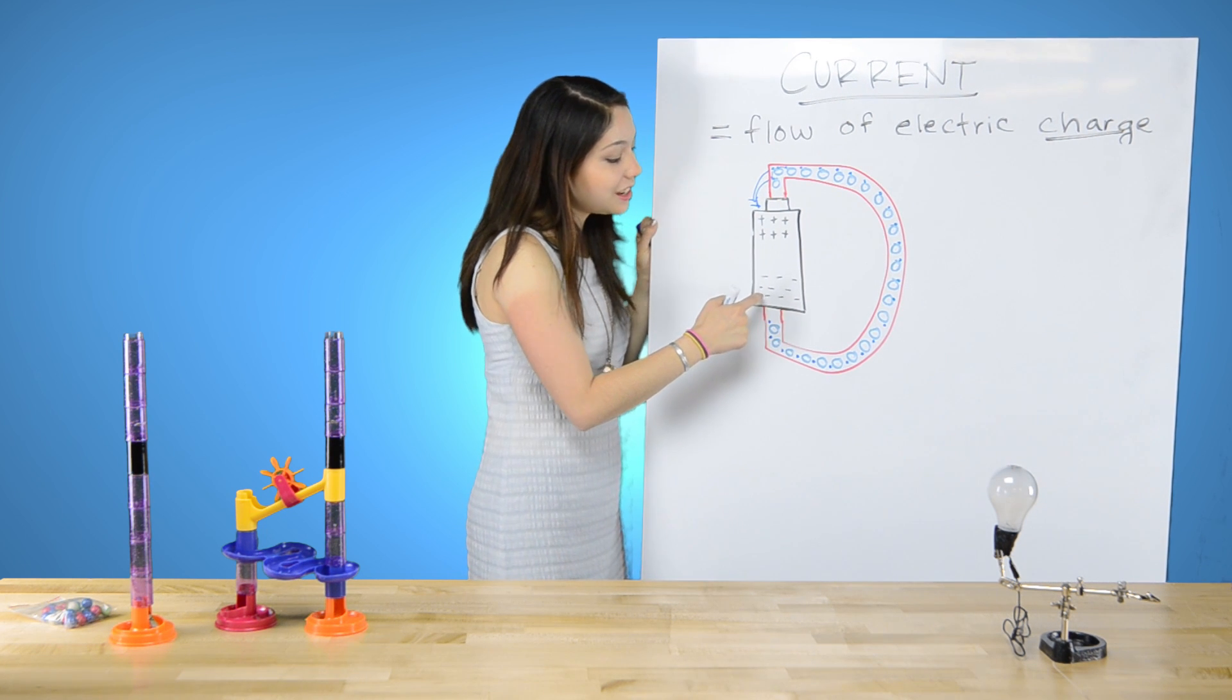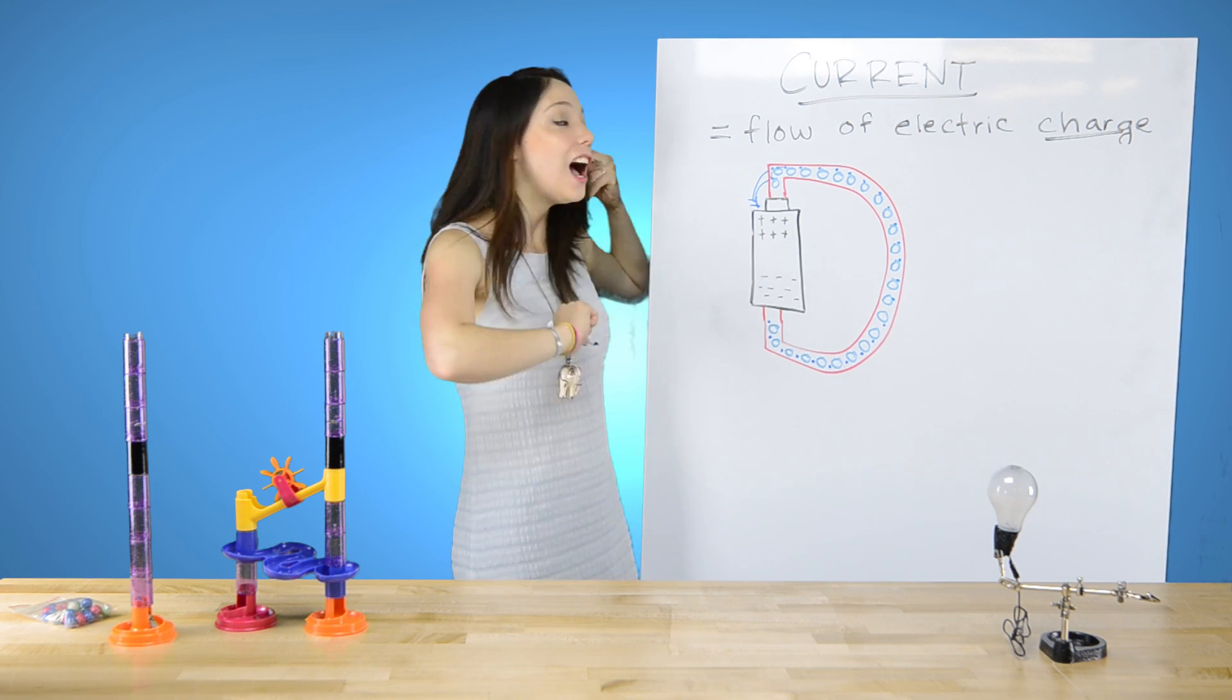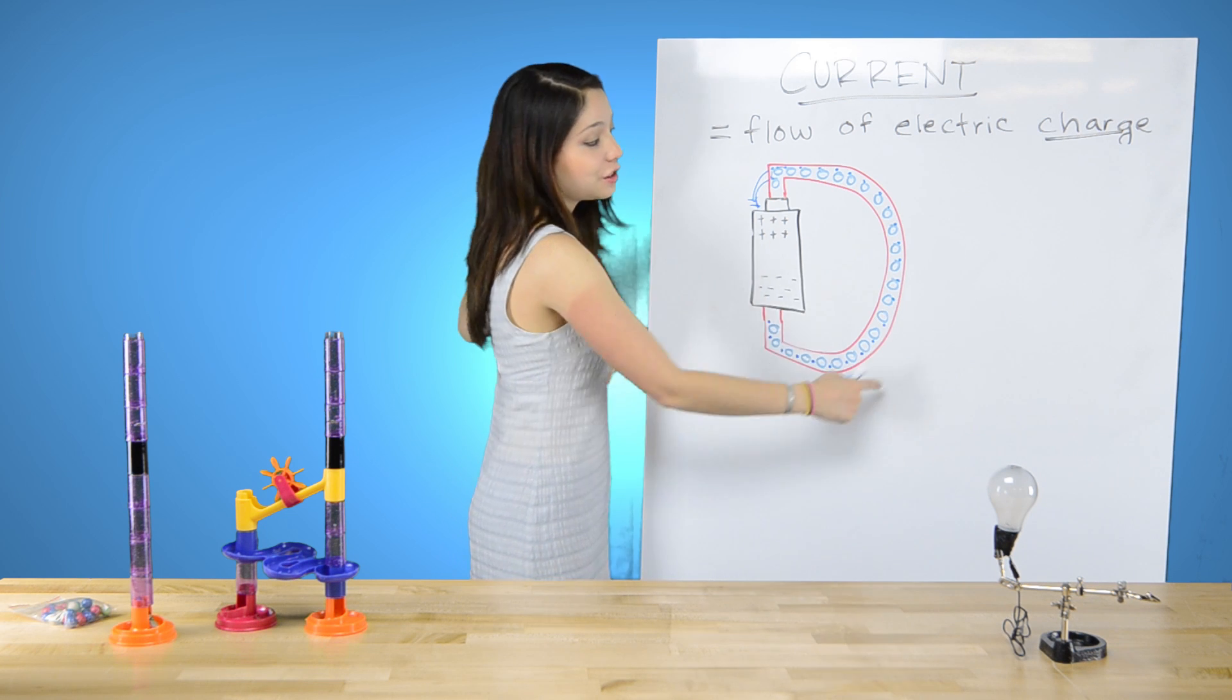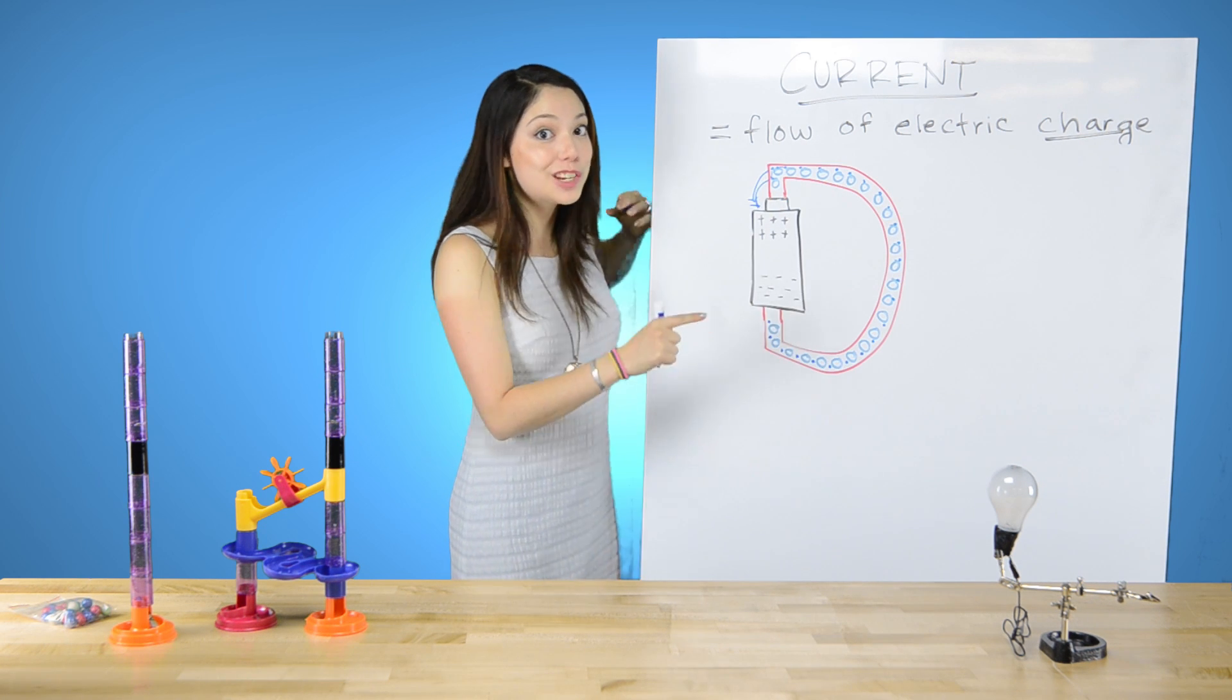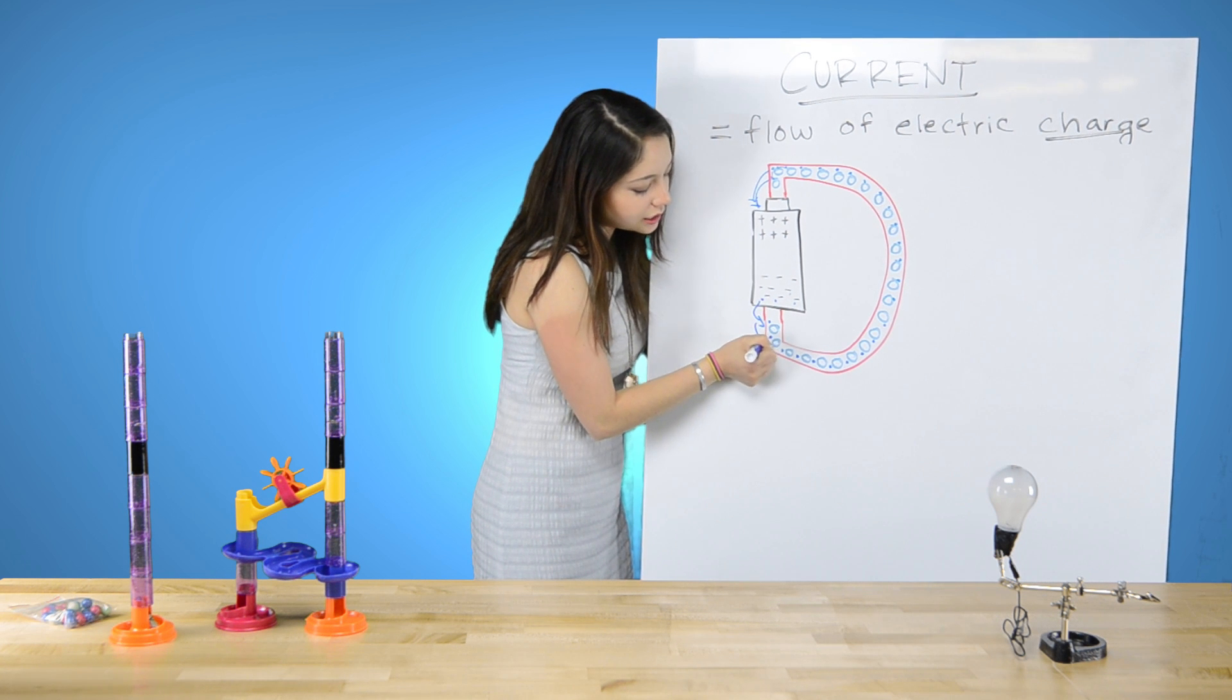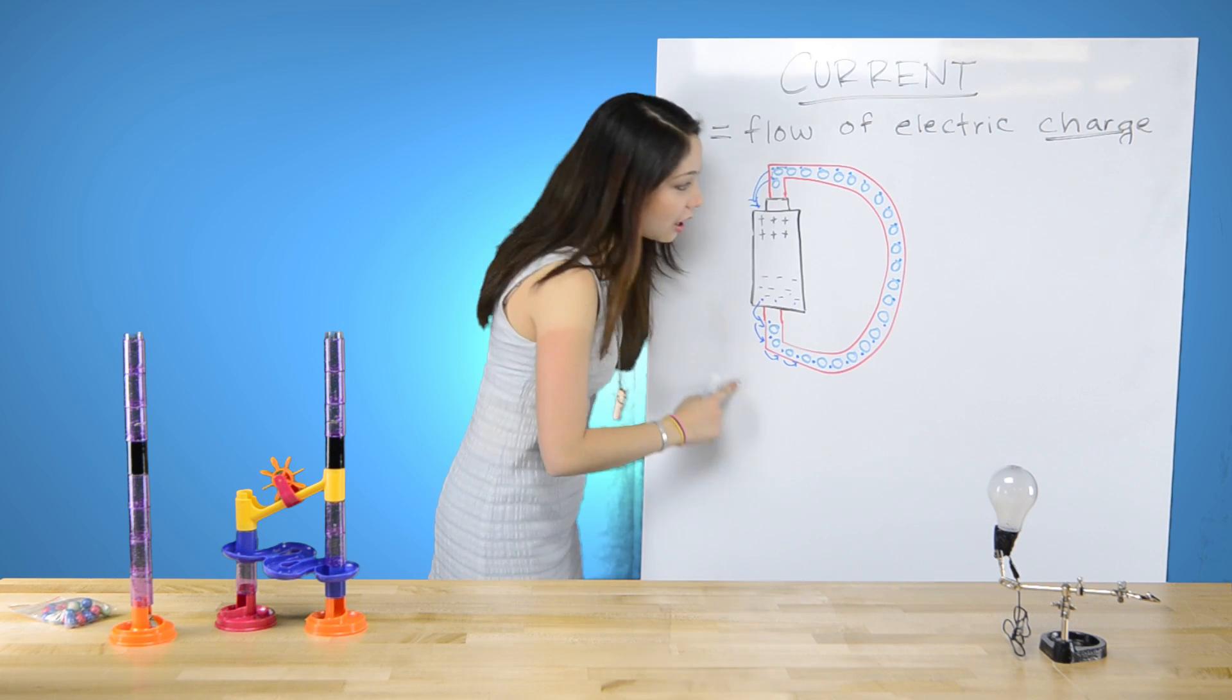All of the electrons in here are like, I see the light, I see the positive, and I want to go to it because opposites attract. You know, they're like falling head over heels in love with that positive charge. And we need to go get there right now. All these extra electrons in here are jumping out and racing to go to the next one. And that's what causes a current.